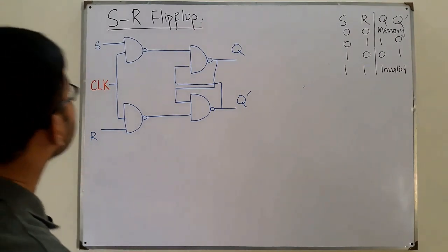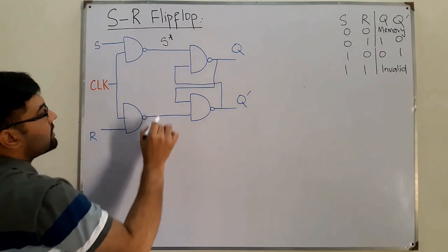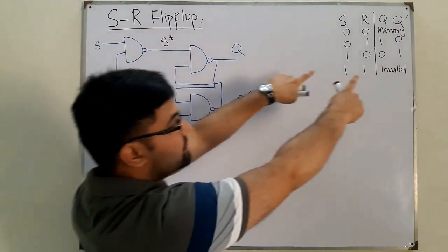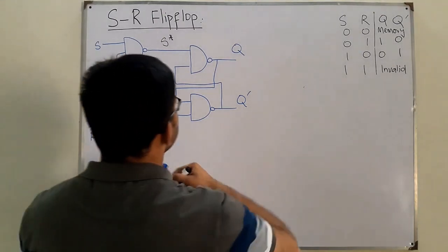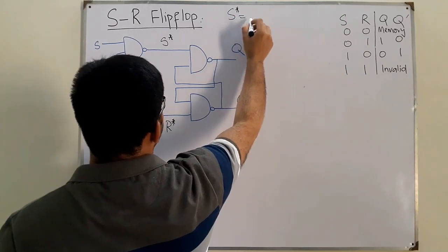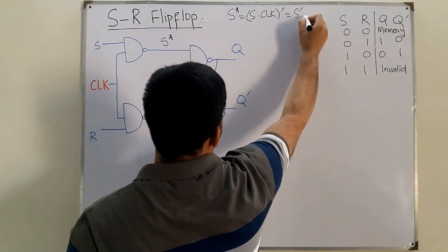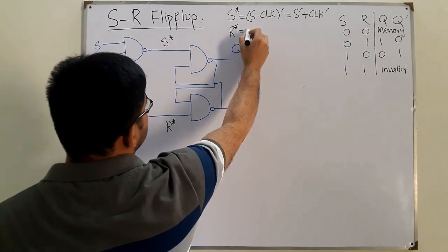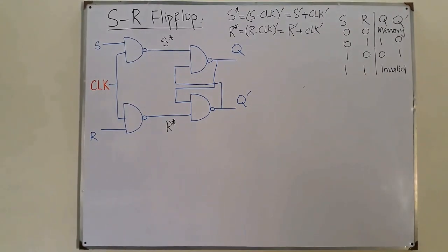Now for this SR flip-flop, the inputs to the SR latch portion are S* and R*. From the circuit we can derive that S* equals S·CLK whole complement, which by De Morgan's law is S̄ OR CLK̄. Similarly, R* equals R·CLK whole complement, which can be written as R̄ OR CLK̄.